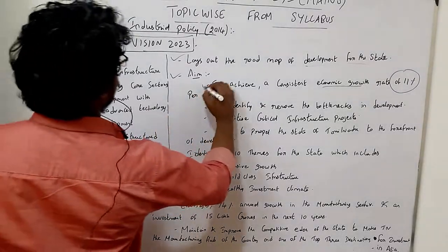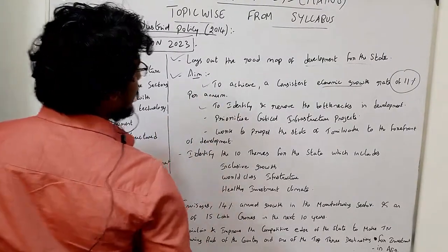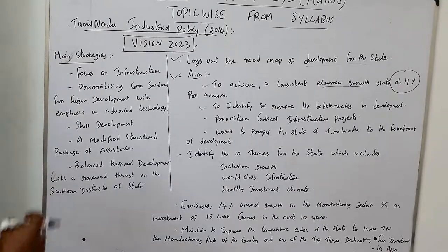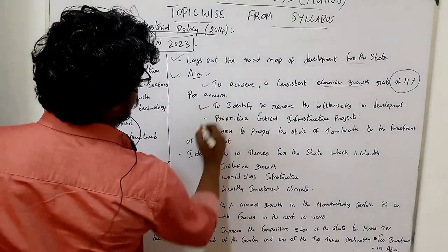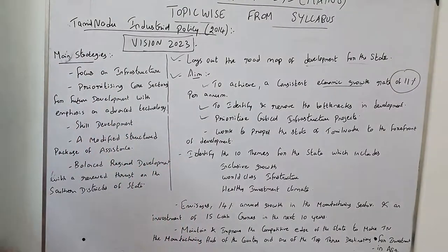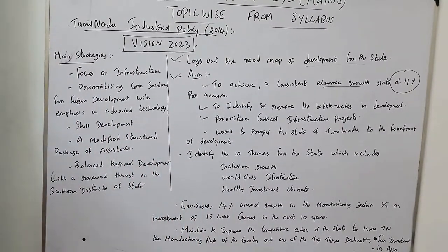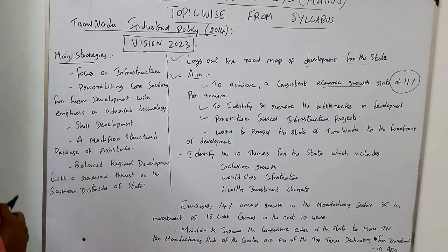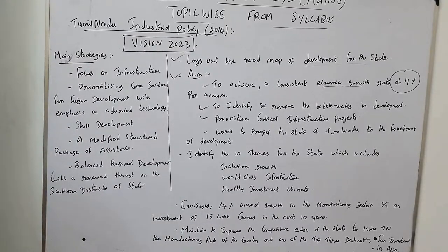The second point is to identify and remove the bottlenecks in development, and to prioritize critical infrastructure projects. The third point is to identify critical needs of the northern region.